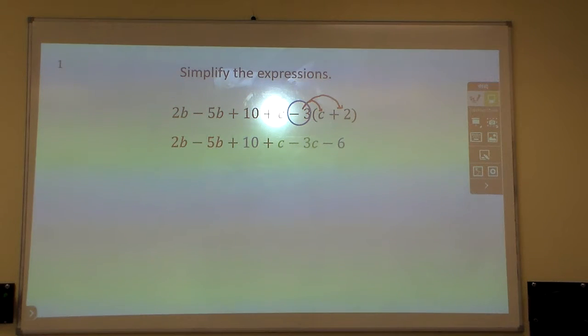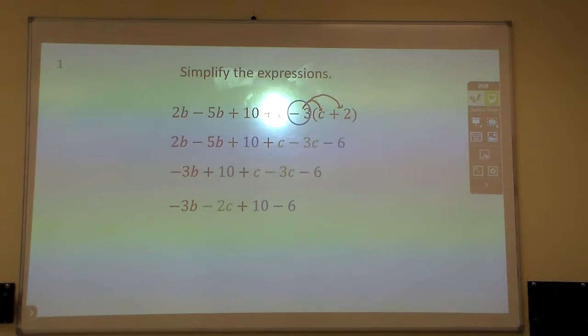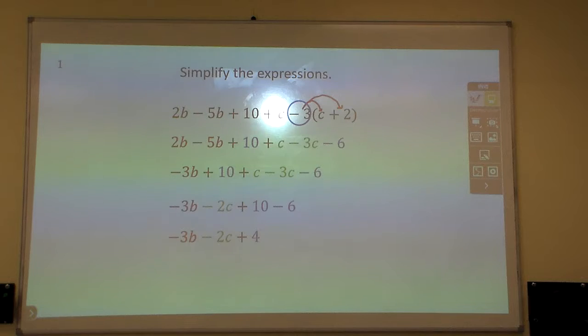So 2b minus 5b will be negative 3b. And then I got the c minus 3c, which is a negative 2c. And then 10 minus 6 is 4.